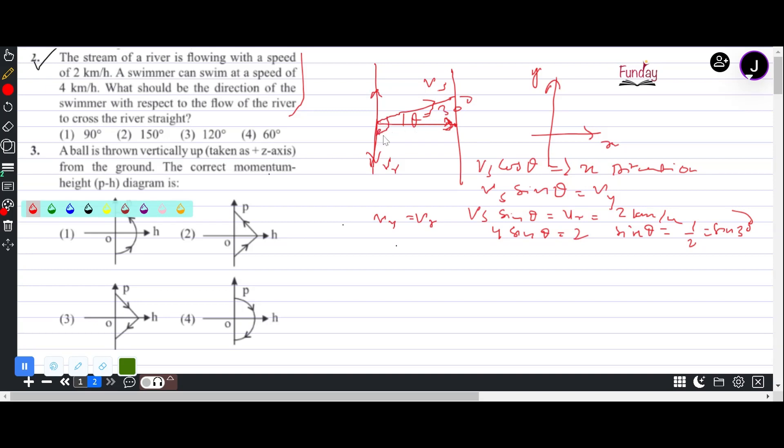Now we will take up the next question. The ball is thrown vertically up, taken as plus Z axis, from the ground. The correct momentum-height diagram is which one?